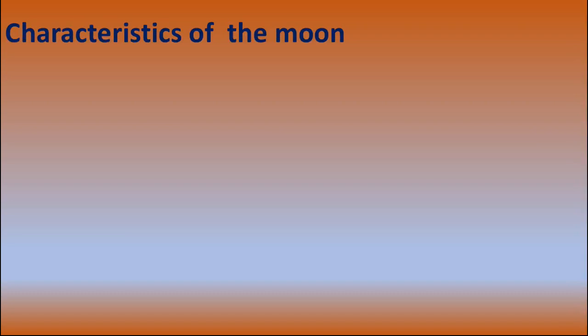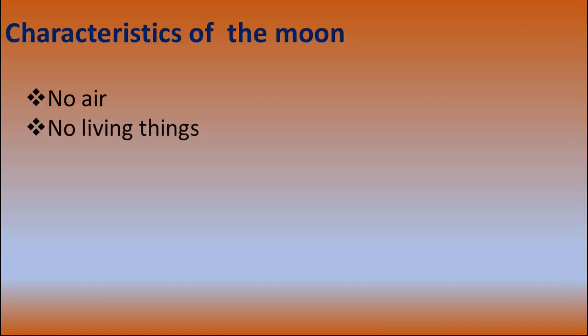Now, what are the characteristics of the moon? There are so many questions that arise in our mind about the moon. The moon has no air. When there is no air, how do people go to the moon? The scientists or the astronauts take oxygen cylinders along with them when they go to the moon, because there is no air on the moon. So when there is no air on the moon, no living thing can survive.